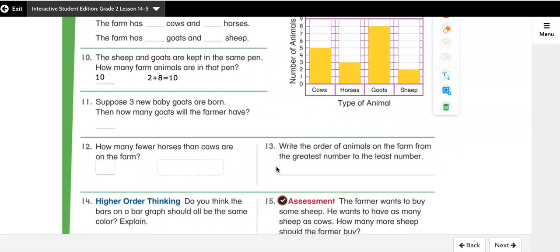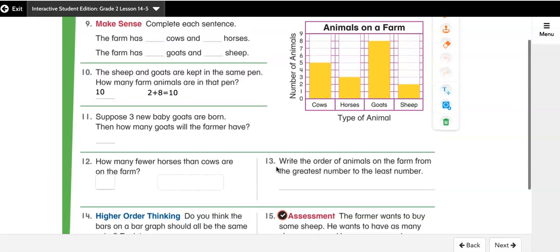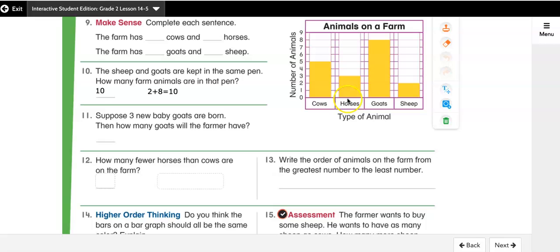Number 12 says how many fewer horses than cows are there on the farm? So again, I need to figure out how many horses there are and I can see that there are three horses and then I need to see how many cows there are. And I can see that there are five cows. And I'm looking for the difference between horses and cows. And I know that the difference is an answer to a subtraction problem. So I'm going to write a subtraction problem.